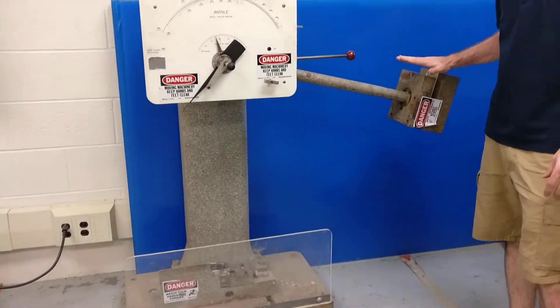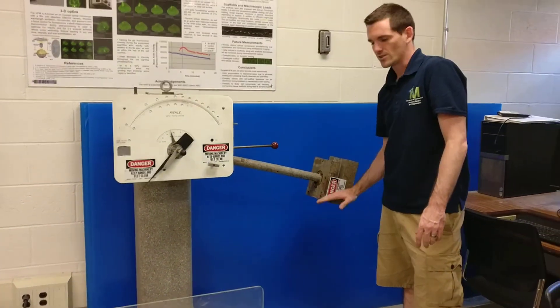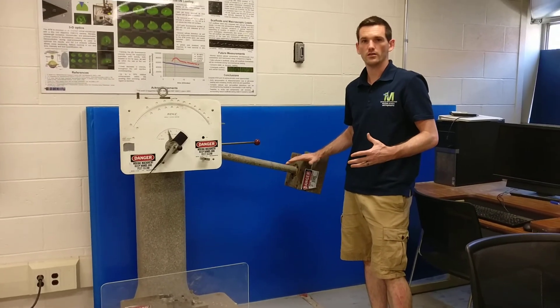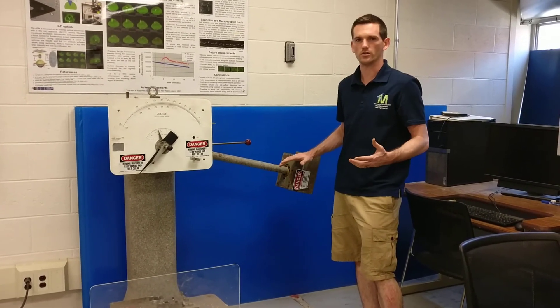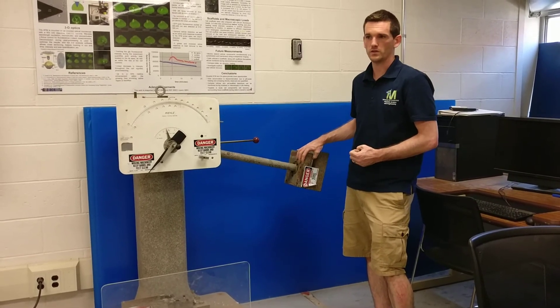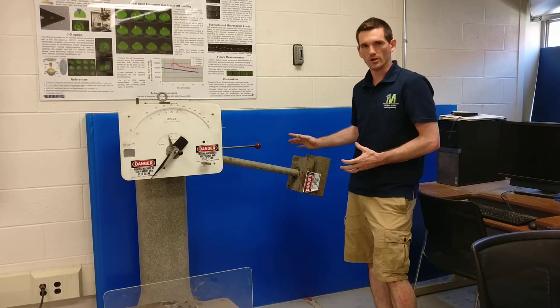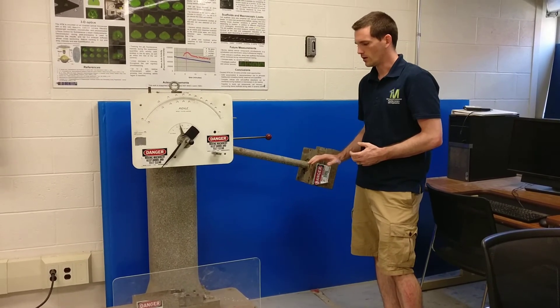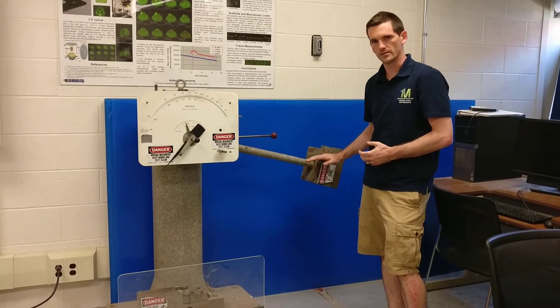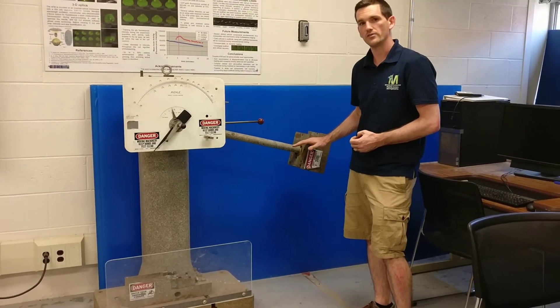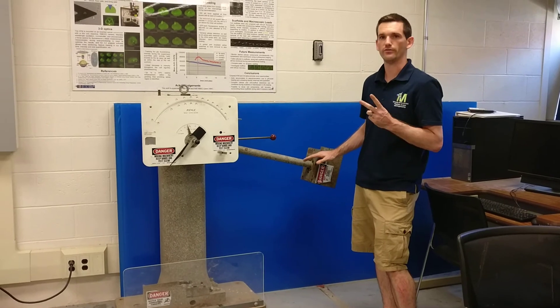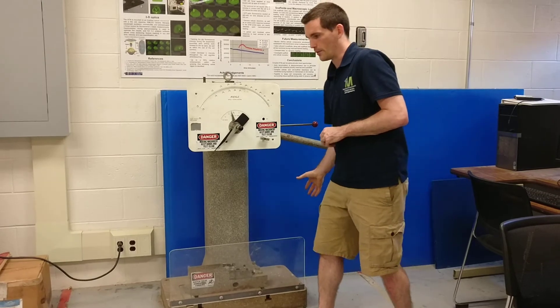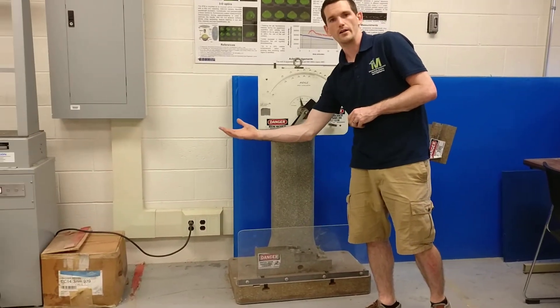So the way this works is we have a 60-pound hammer, and it starts at 2 feet off the ground. So if you remember from physics, we have a potential energy, and that equals mgh, or its mass times the gravity, 9.8 meters per second squared, times the height, 2 feet. In imperial units, this is going to be 120 foot-pounds, so we have 60 pounds times 2 feet high. And we're going to release the lever. It's going to swing through, hit the sample, and swing to a height on the other side.